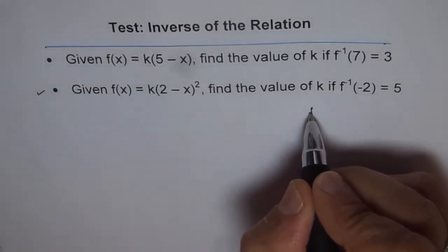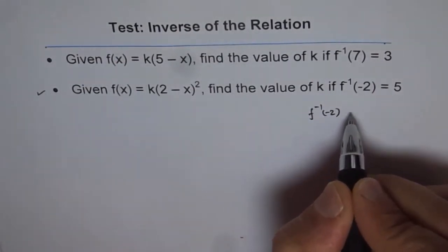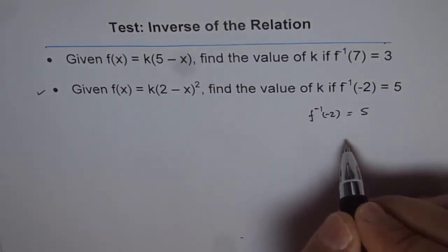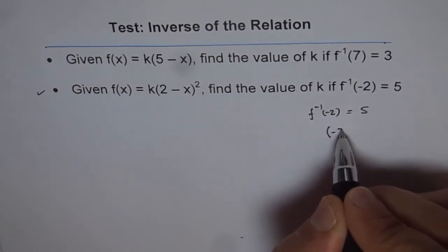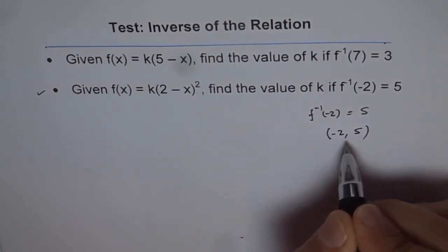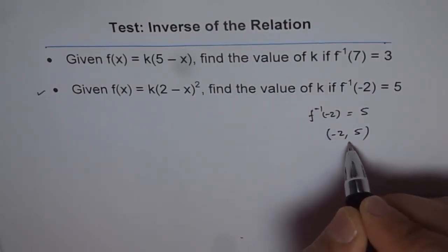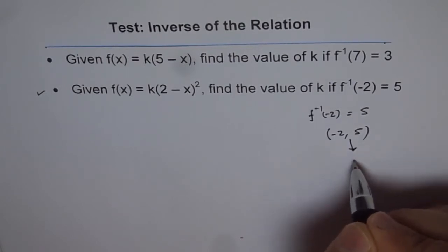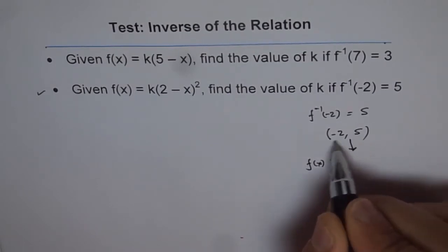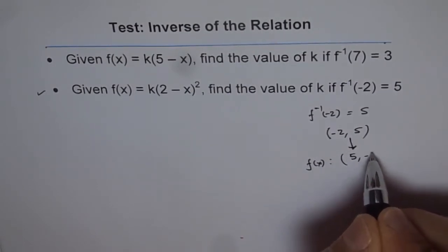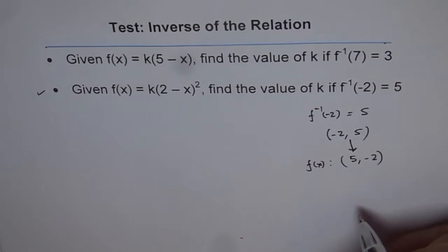When we say f inverse of -2 equals 5, what does that mean? It means that on the inverse function we have a point (-2, 5). That is what it means. So this point will be what on the function? On the function, this point should be swapped: 5 and -2. Correct. So that is our thinking.